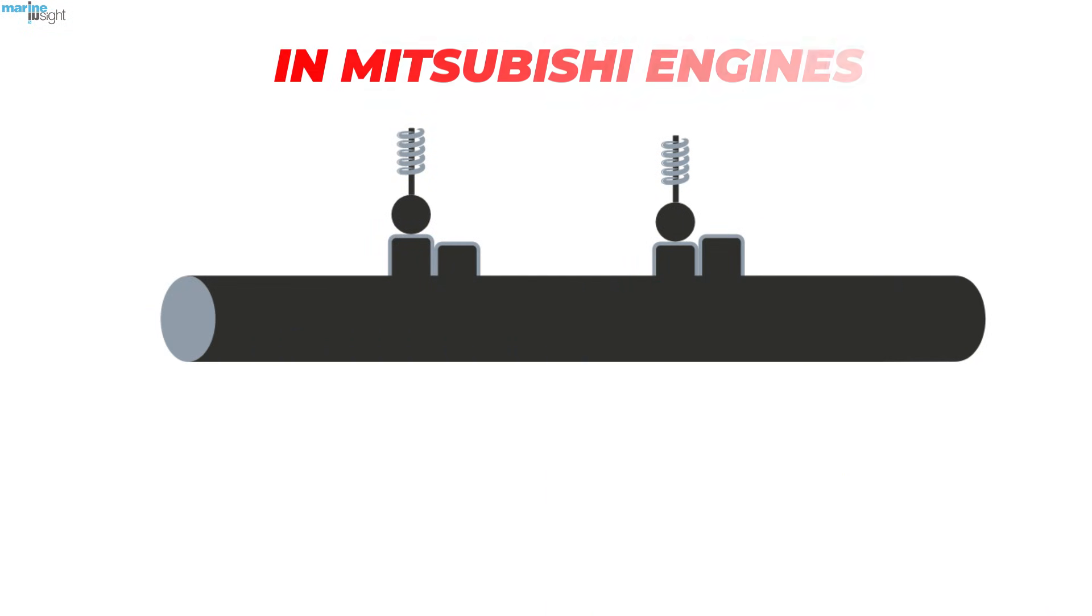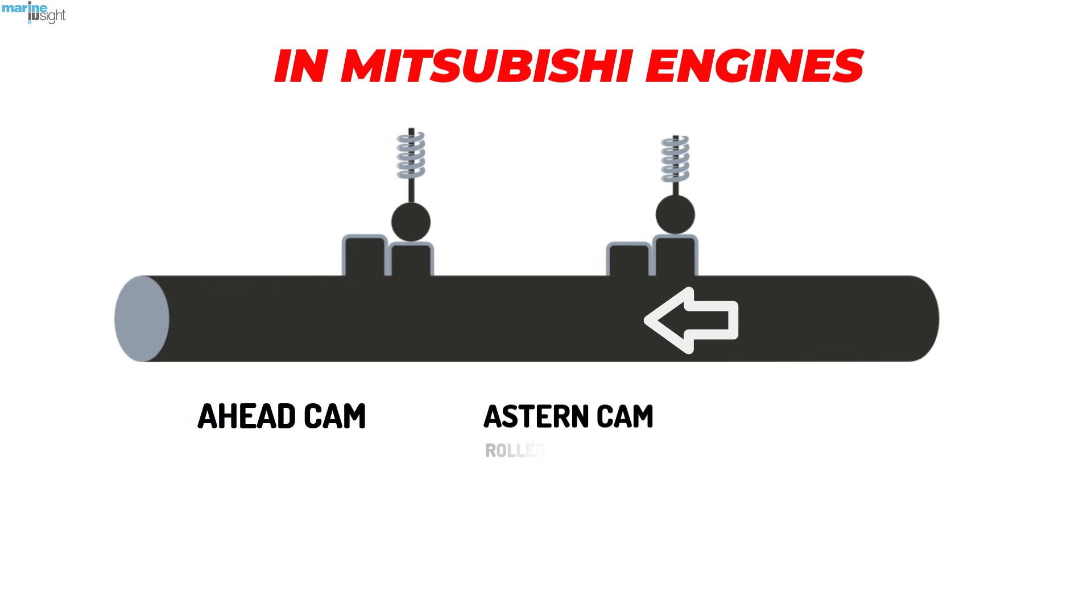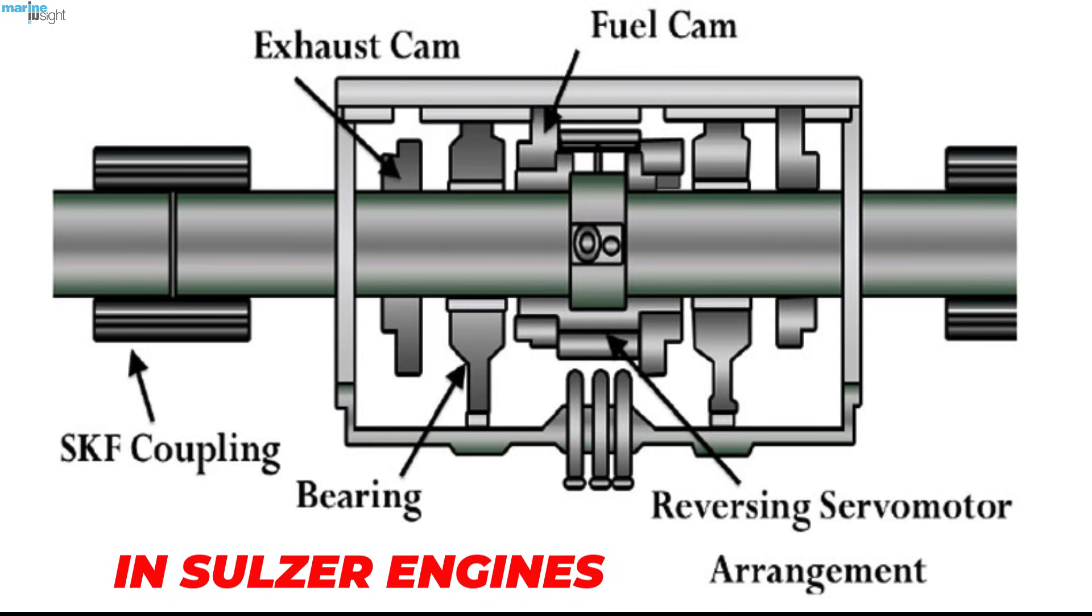In other engines like Mitsubishi, the camshaft contains two cams—one for ahead and one for astern direction for each unit. The entire camshaft is axially moved to change the cam and hence the firing order. In Sulzer engines, the cam alone is moved with respect to the shaft by use of a servo motor.